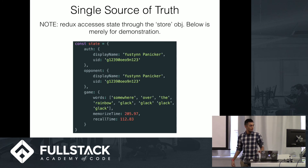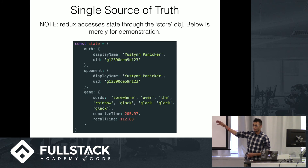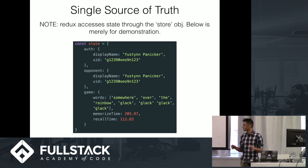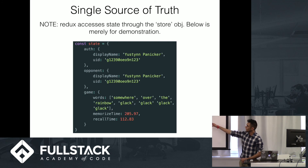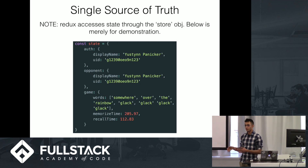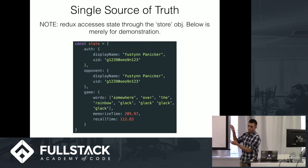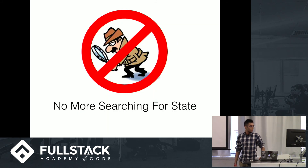For example, I was going to make a game where two people competitively try and memorize words at the same time. In Angular, this would be broken up into a bunch of different stuff like factories and controllers and stuff like that. For Redux, it's sort of all in one place, so you always know where it is — you don't have to search for it anymore.